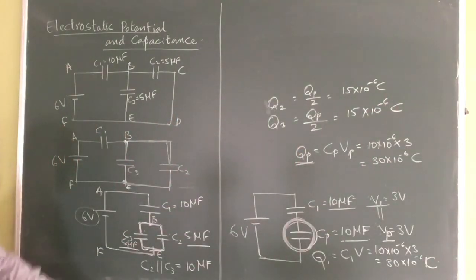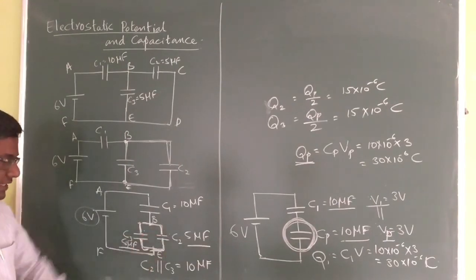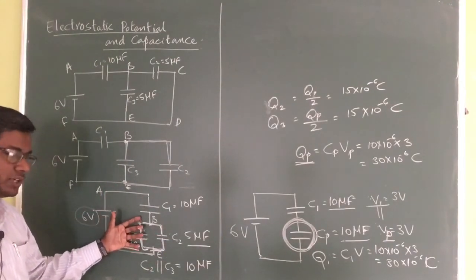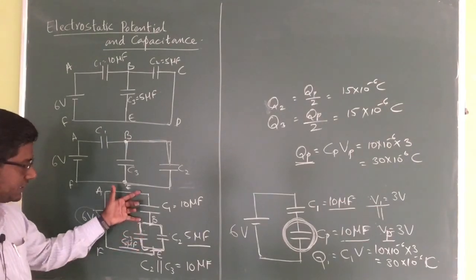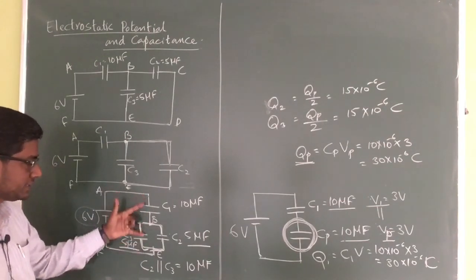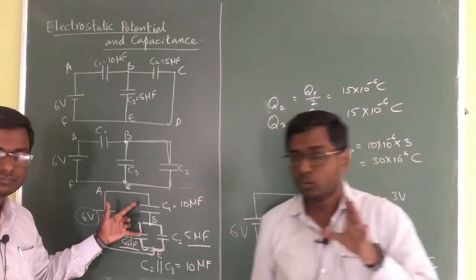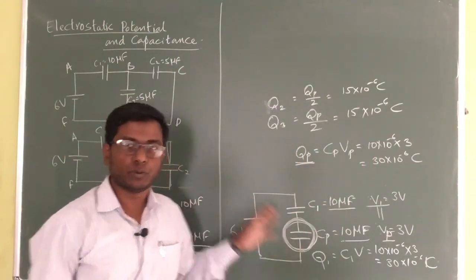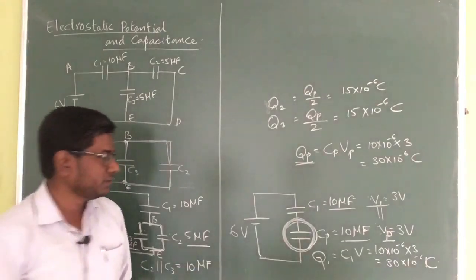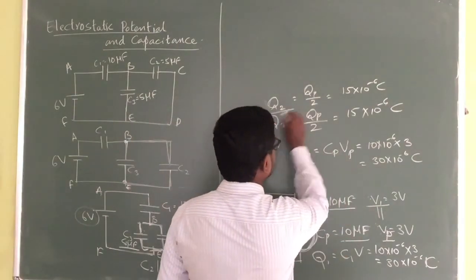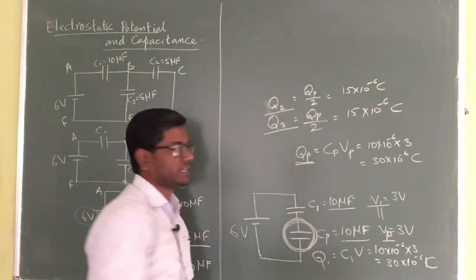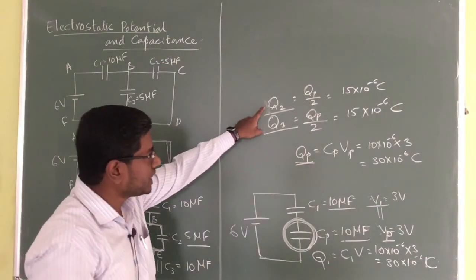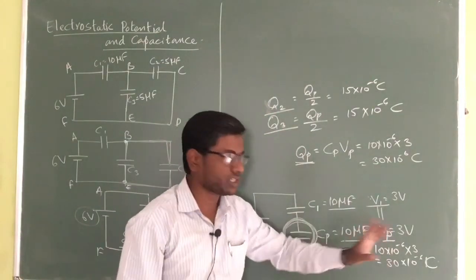The charge across C2 and C3 will be the same, and the potential on the upper part and the lower part of the circuit will also be the same. This equal division of potential and charge is only applicable when the capacitance values are equal. If there is a variation in capacitance, then both the charge and potential values will differ accordingly.